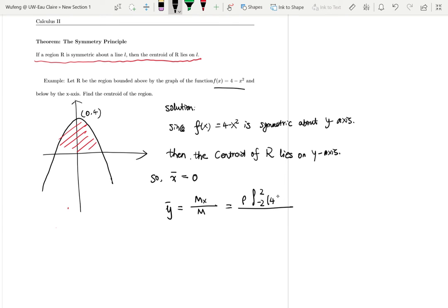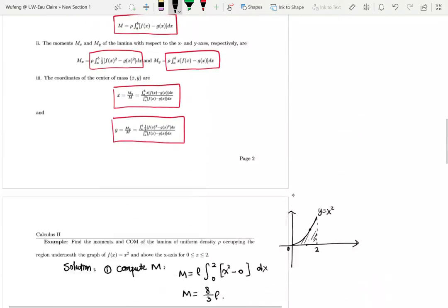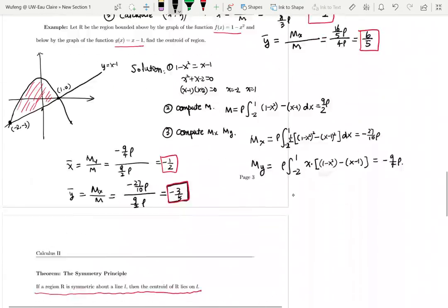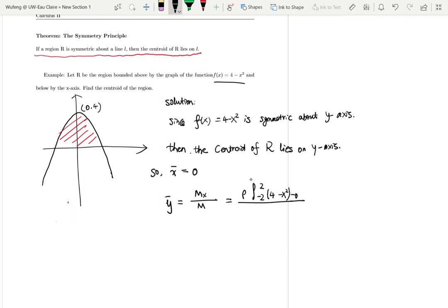And 4 minus x squared minus 0 squared. This is the moment of x. So the moment of x, which is half of that, x squared minus y squared. So we'll have the half here.